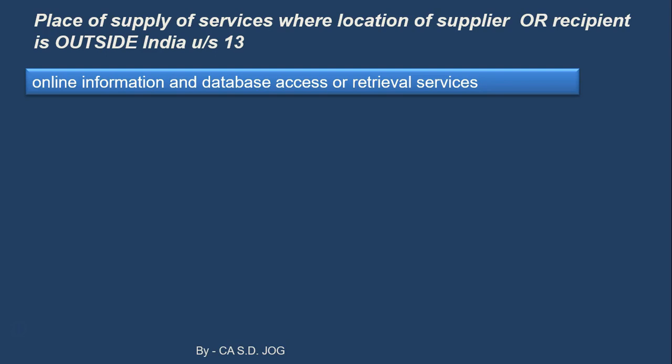So just for the time being, go through this provision and we will address the issue later. In simple words, online information or database access and retrieval services means things like YouTube — we are watching a video on YouTube. That is online information, or database access — we are accessing or retrieving a specific video, and that server might be in India or outside India. In such cases, what will be the place of supply? It is the location of the recipient of services. So if the service of YouTube is being availed by a person sitting in Mumbai, the place of supply is Mumbai.